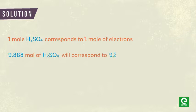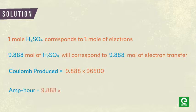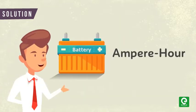Coulombs produced = 9.888 × 96500. Therefore, ampere hours = coulombs produced ÷ 3600 = 265 Ah. This concludes our example on how to find ampere hours for any battery.